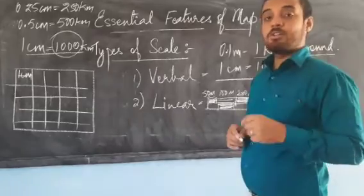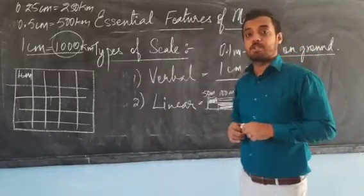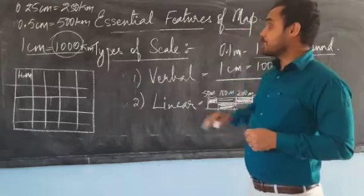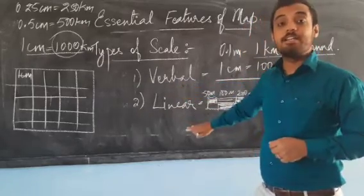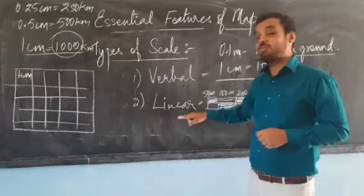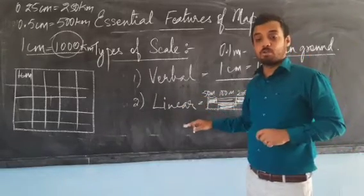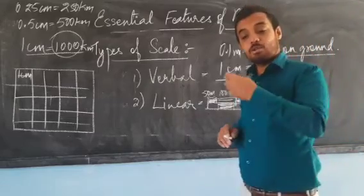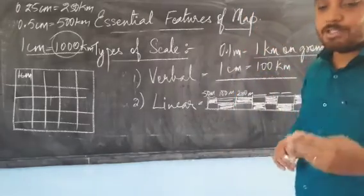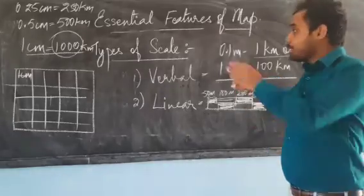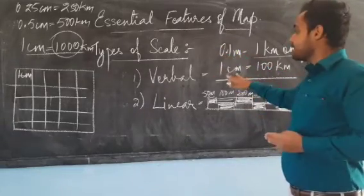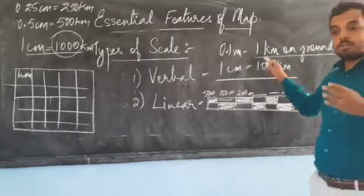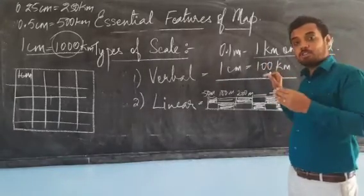Now, coming to the different types of scale — what are they? The two types of scale are verbal and linear. A verbal scale is one that mentions the relationship in words, for example: one centimeter is equal to 100 kilometers. This is a verbal scale.